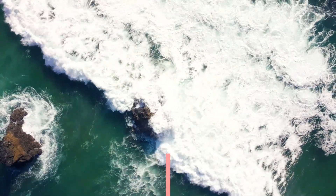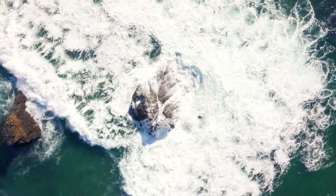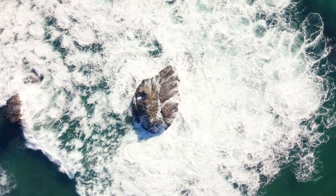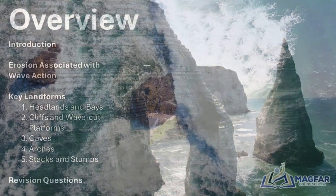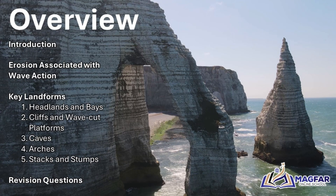In today's adventure, we're diving into the mighty power of the ocean and how waves shape the coastline through erosion. From towering cliffs and deep caves to dramatic arches, isolated stacks, and worn-down stumps, we're exploring how the sea slowly but surely carves away the land. By the end of this lesson, you'll understand why certain parts of the coast erode faster than others, how wave action turns a simple crack into a cave and a cave into an arch, and what the final stages of coastal erosion tell us about the strength of the sea.